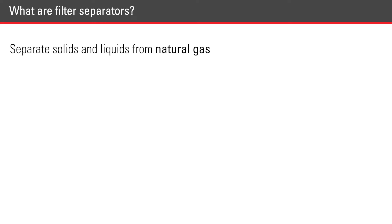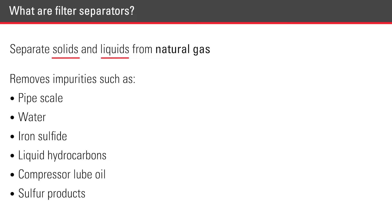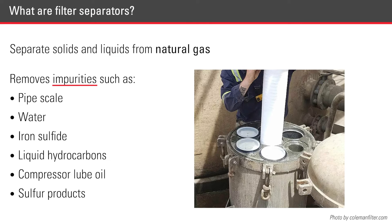A filter separator is used to separate solids and liquids from natural gas. Specifically, a filter separator removes impurities such as pipe scale, water, iron sulfide, liquid hydrocarbons, compressor lube oil, and sulfur products from the natural gas.